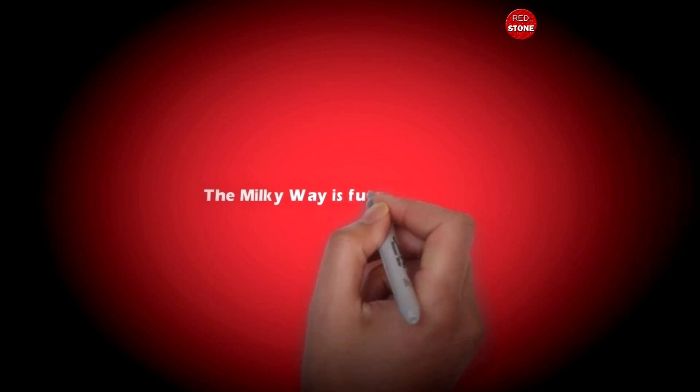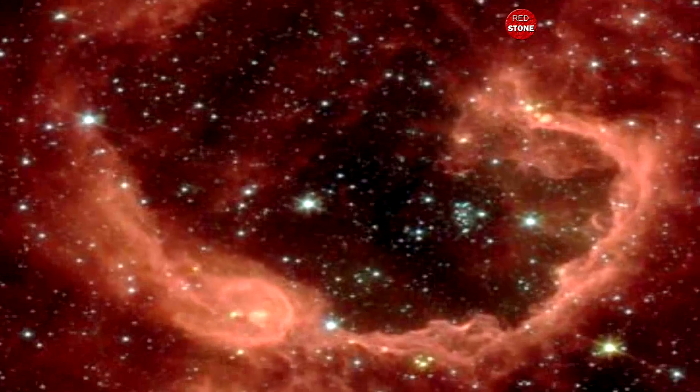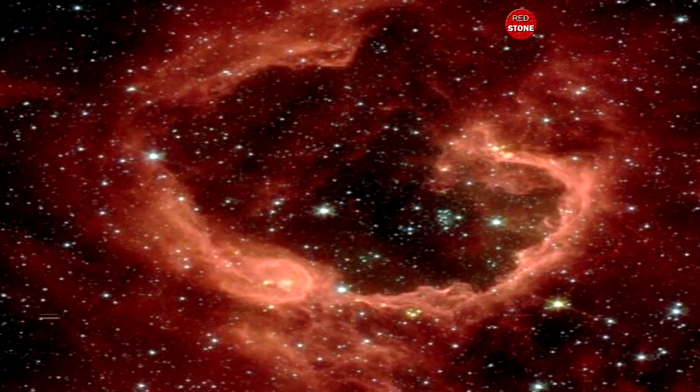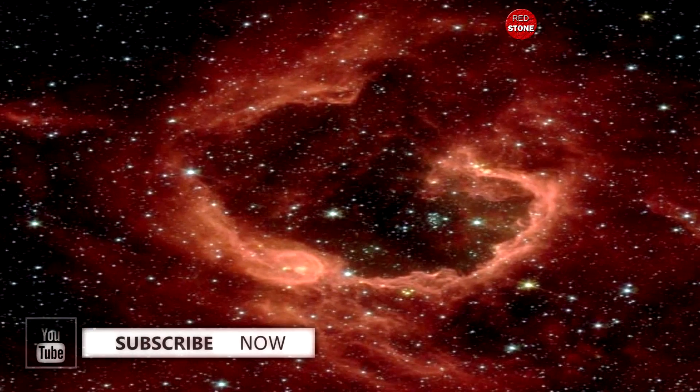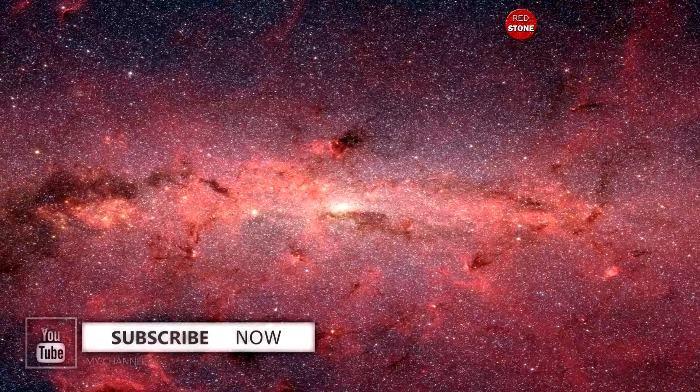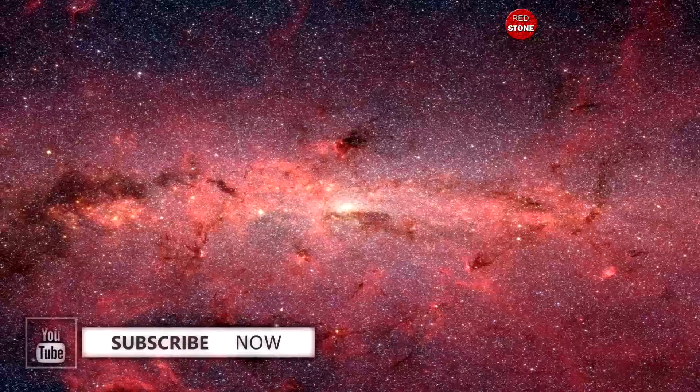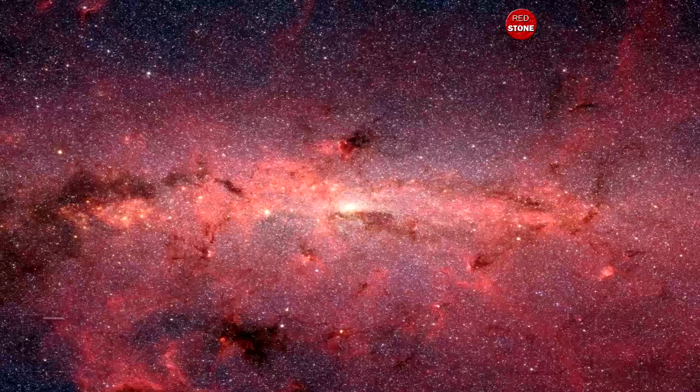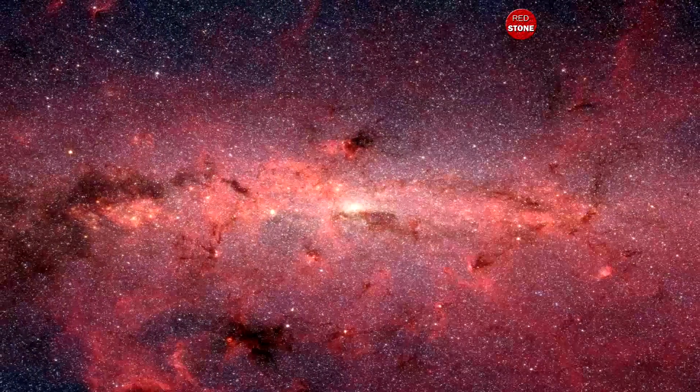8. The Milky Way is full of toxic grease. Swirling through the mostly empty space between stars in our galaxy is a bunch of toxic grease. Oily organic molecules known as aliphatic carbon compounds are produced in certain types of stars and then are leaked out into interstellar space.